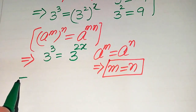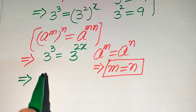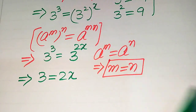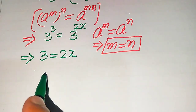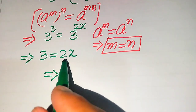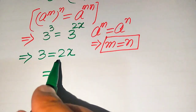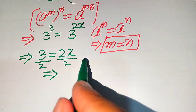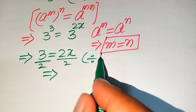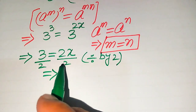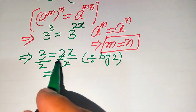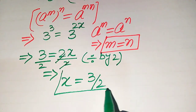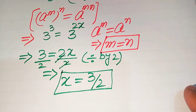The bases on both sides are the same, so we equate the exponents and get 3 equals 2x. Because we are solving for x, we need to remove the 2 from the right hand side by dividing both sides by 2. The 2 cancels out and we get x equals 3 divided by 2. This is the value of x.